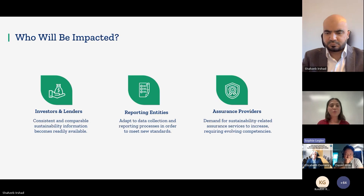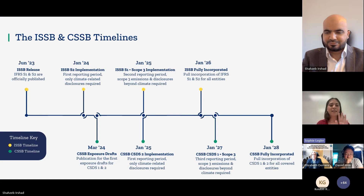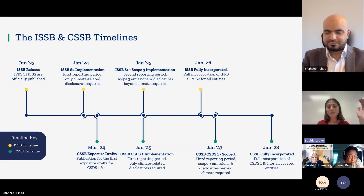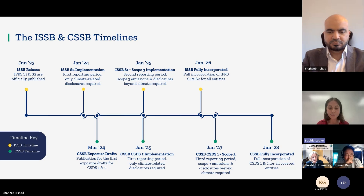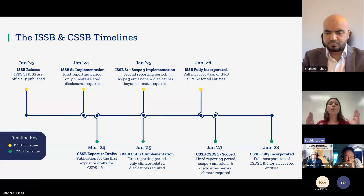Moving along into the timeline: looking at ISSB first, IFRS S1 and S2 were first released in June of last year, with implementation starting this past January — so we are currently in the first reporting cycle. ISSB has provided reliefs to make the adoption process more palatable. The very first reporting cycle only requires companies to report on climate-related disclosures — so only S2. As of next year, they would also have to include the general sustainability disclosures.